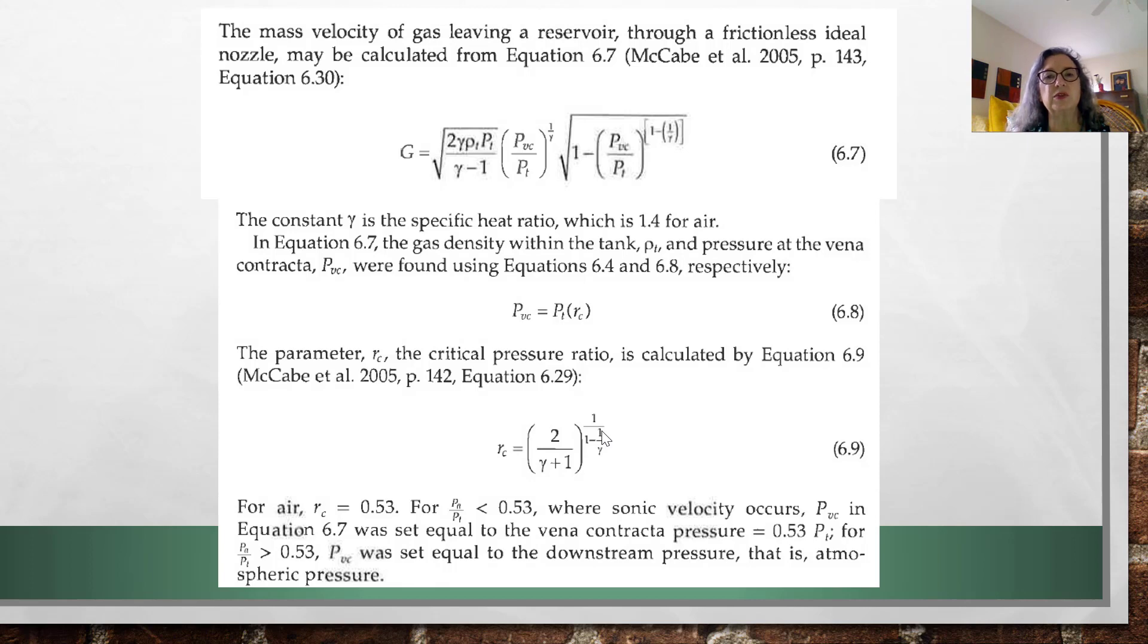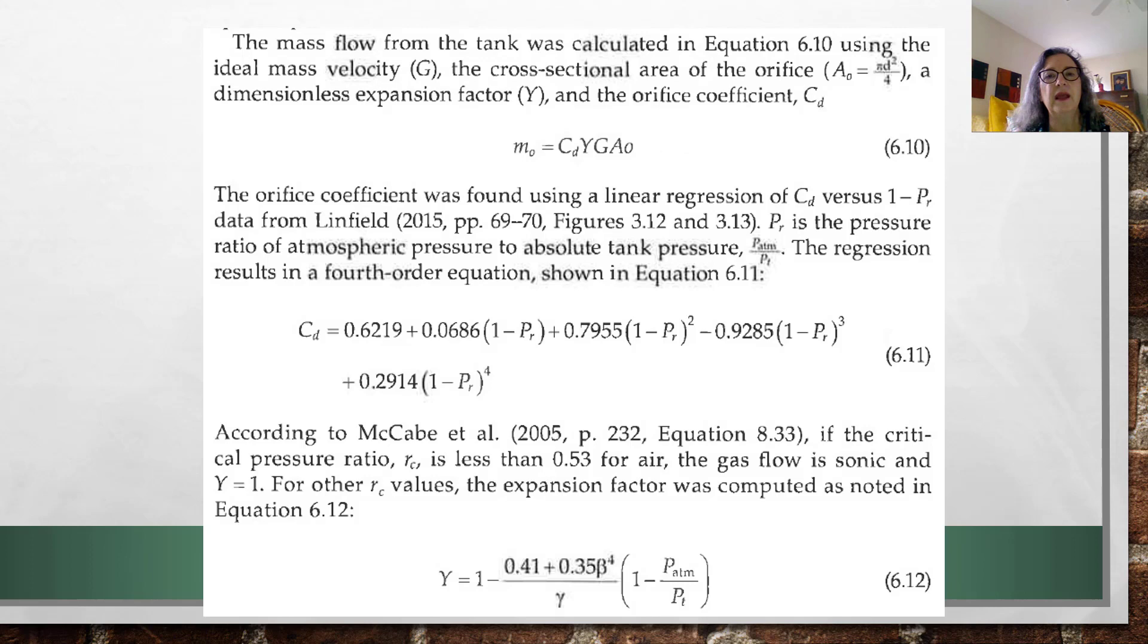Gamma, because we're using air, is 1.4. Again, more fluid mechanics. The mass coming out can be related to an orifice coefficient. And it becomes the mass flow rate coming out is C sub D, Y, or capital gamma, G, A sub naught.